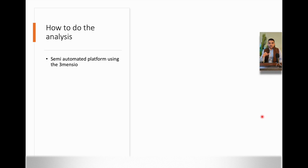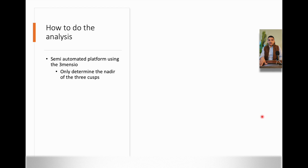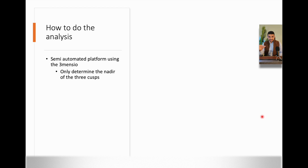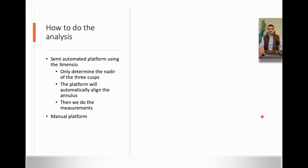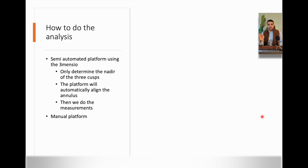Now, let's talk practical. How do we do the analysis? There are two methods. One is a semi-automated platform using 3Mensio, which is the only one available commercially. All you have to do is determine the bottom of the three leaflets, and the platform will automatically align the annulus. The other approach uses manual platforms, which is what we're going to train on, because these can be acquired on your computer — whether Mac or Windows. I will provide links to download those platforms.